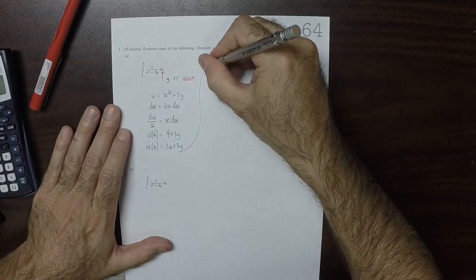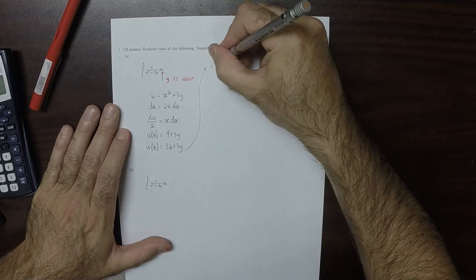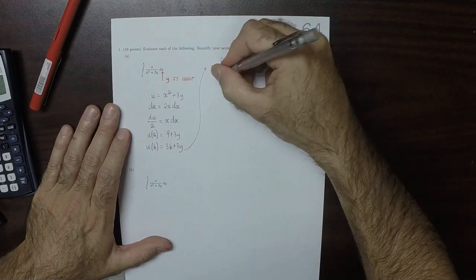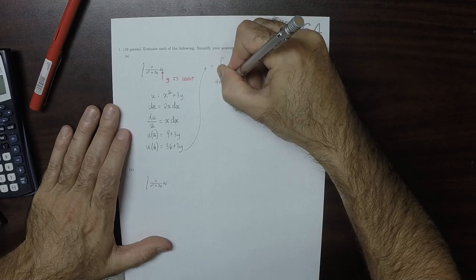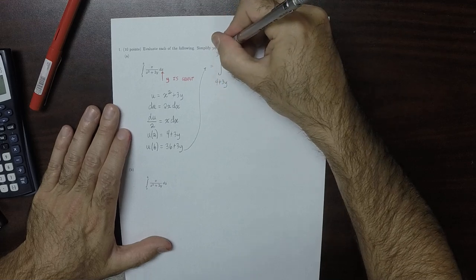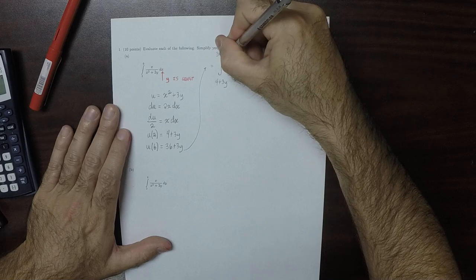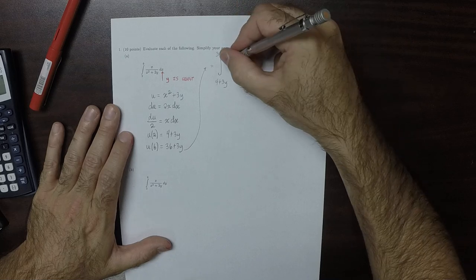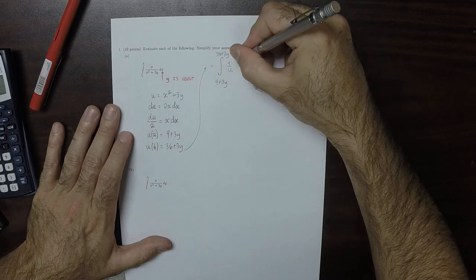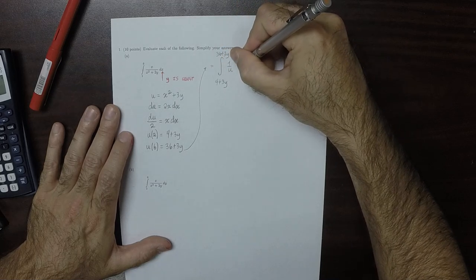So after that substitution, the integral becomes integral from 4 plus 3y to 36 plus 3y. And now we're integrating 1 over u du over 2.